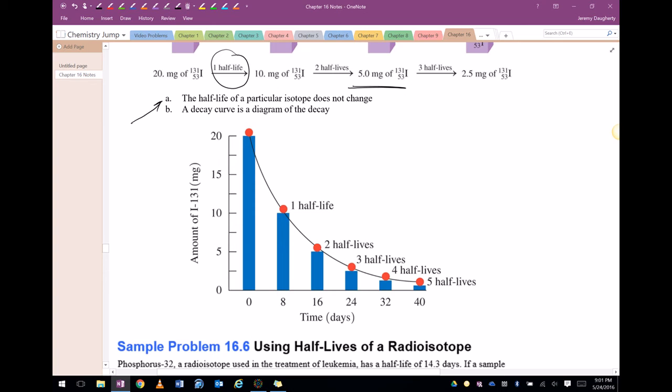We can't predict which atoms will decay, but we can say if we have this large sample, half of it will decay in this amount of time. And it always follows a decay curve that looks like this.